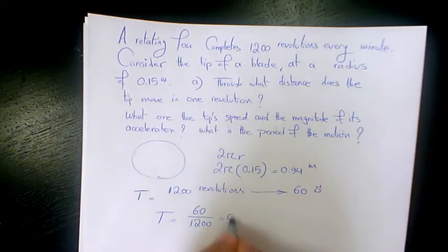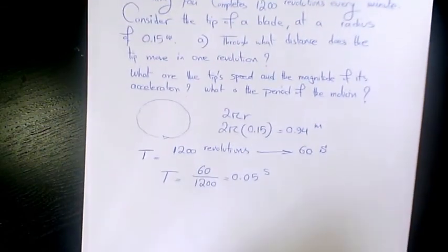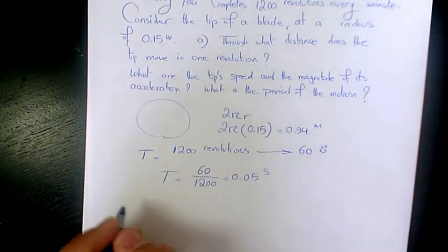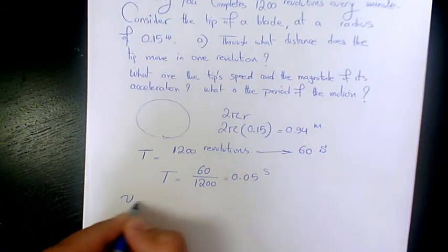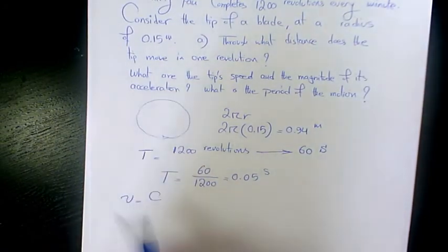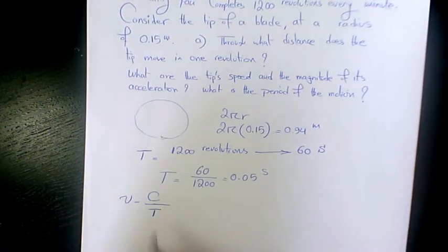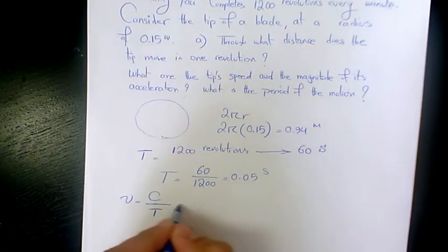Velocity is going to be the circumference of the circle for one revolution divided by time of revolution. So it's 0.94 divided by T, where it's 60 seconds for 1200 revolutions.